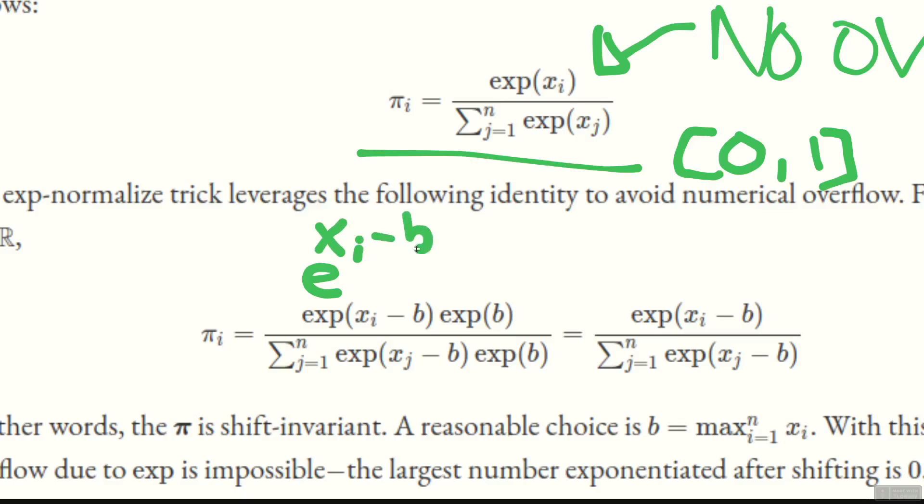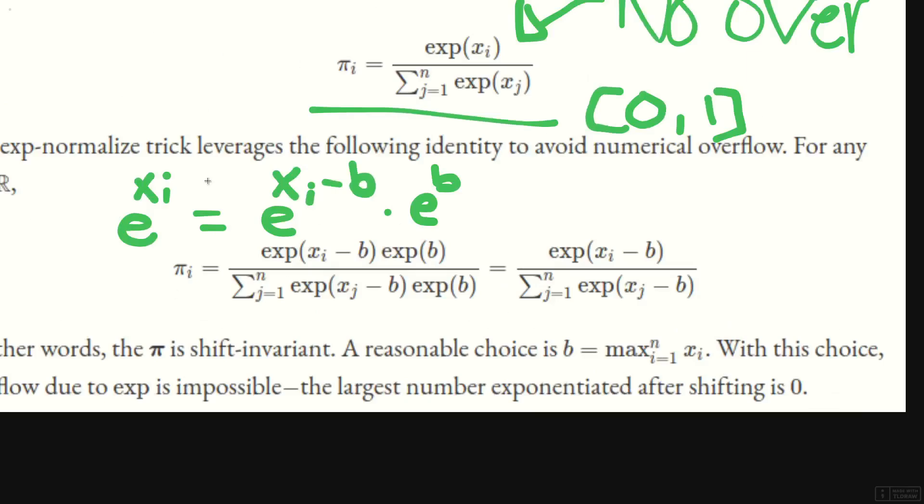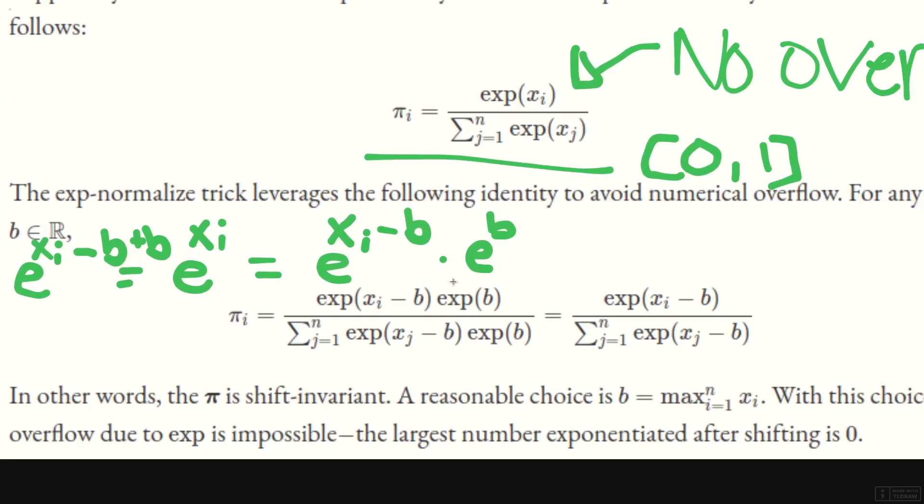The trick goes like this: you do e to the xi, and then you're going to add a quantity b, whatever it is, and then you can do e to the b. This is exactly the same thing as e to the xi. Why is that? It's because of this property: x to the n times x to the m equals x to the n plus m. What we're actually doing here is e to the xi minus b plus b. Obviously these just cancel out, so this whole thing is the same thing.